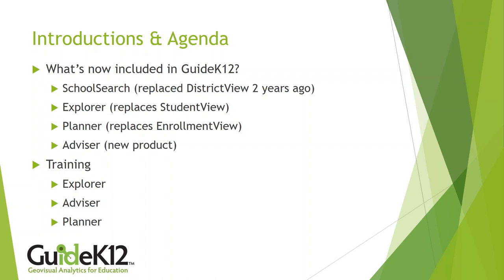Today I want to remind everybody what's included in Guide K12. Some of you may have joined our upgrade preview webinar a few months back. As usual, you have access to your standard three products plus a new one: School Search, Explorer which replaces Student View, Planner which replaces Enrollment View, and Advisor — the completely new product — for analyzing trend data in bar charts, line charts, pie charts, and thematic maps.